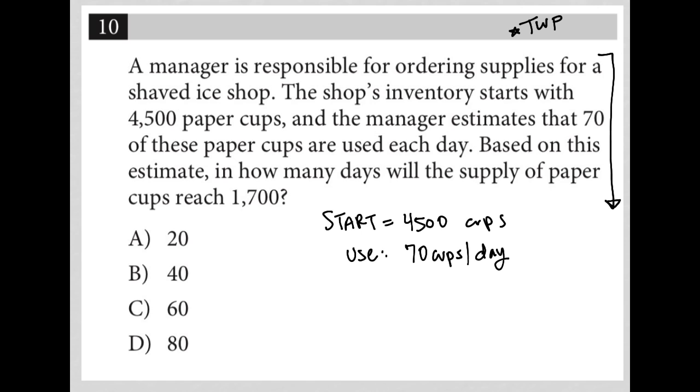So I'm starting off at, let's say my end, at least the point at which I'm ending to get a count of days for is 1,700 cups. So let's just think about that. What does that mean? We started off at 4,500 cups and we want to end at 1,700 cups.